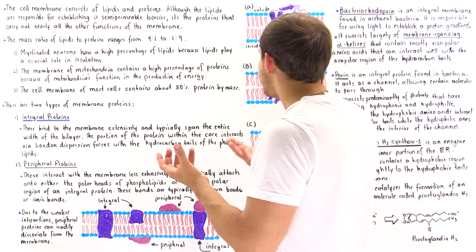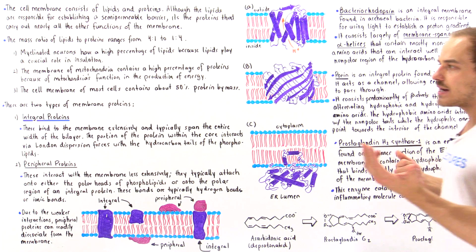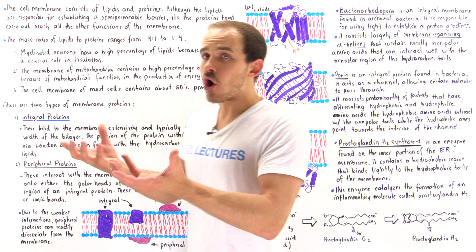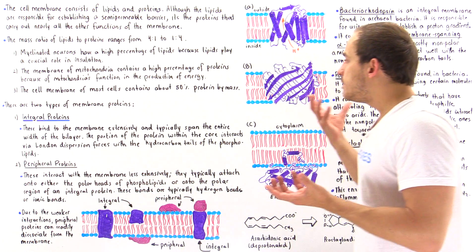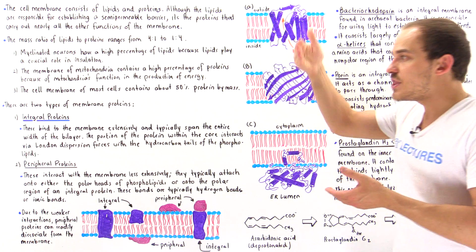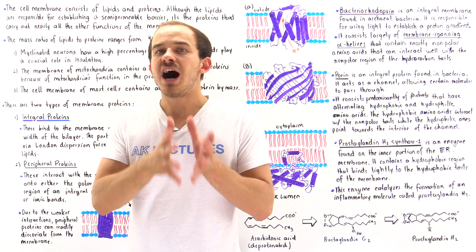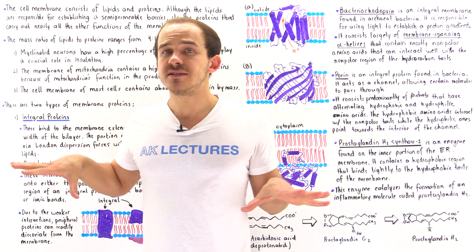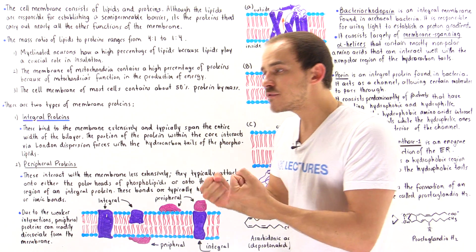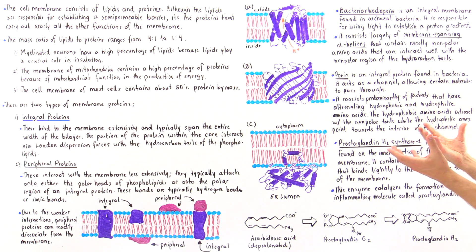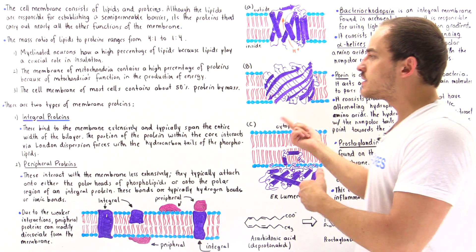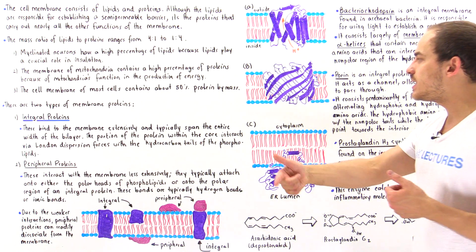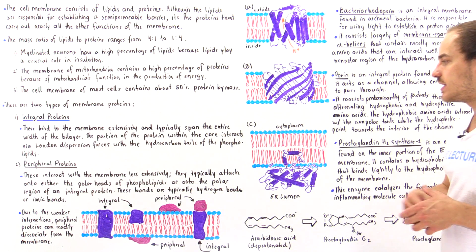We have many examples of these channel proteins inside our body. Gap junctions found in cardiac muscle cells are channels that allow the propagation and movement of ions, creating the movement of the action potential from one cardiac cell to the adjacent cardiac cell, generating a forceful and strong contraction of the heart. We also have aquaporins, which allow the movement of water molecules across the membrane.